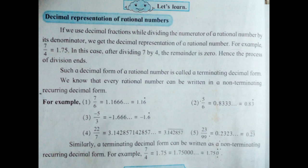7 upon 4 is equal to 1.75. In this case, after dividing 7 by 4, the remainder is 0. Hence, the process of division ends. Such a decimal form of a rational number is called a terminating decimal form.